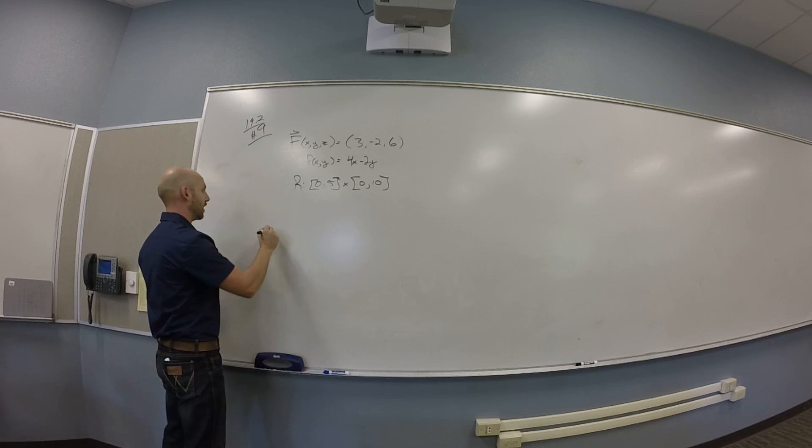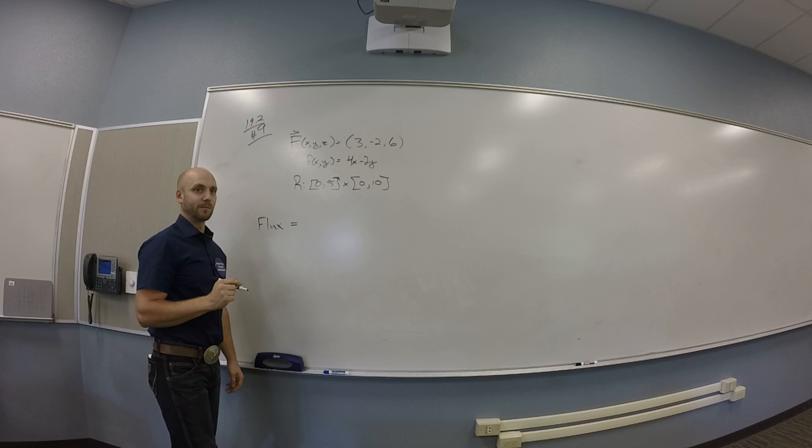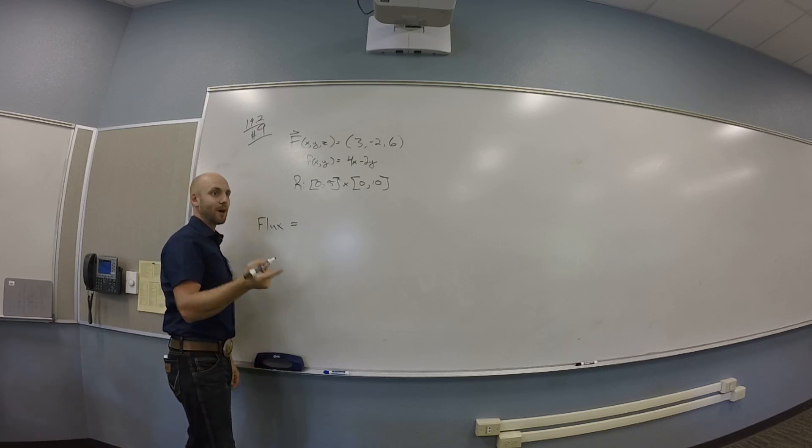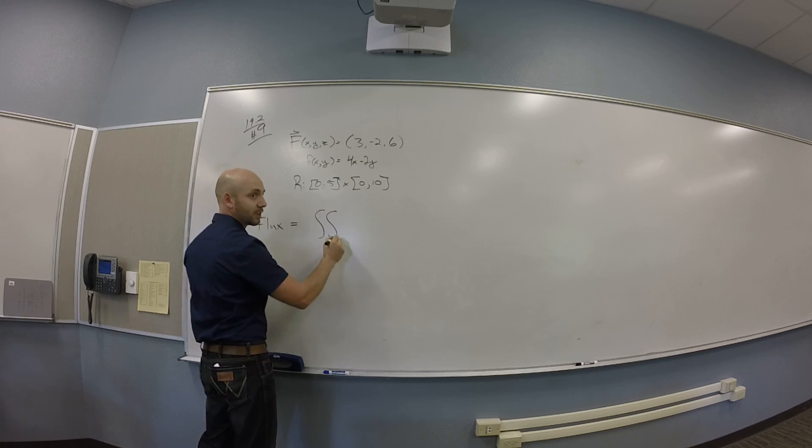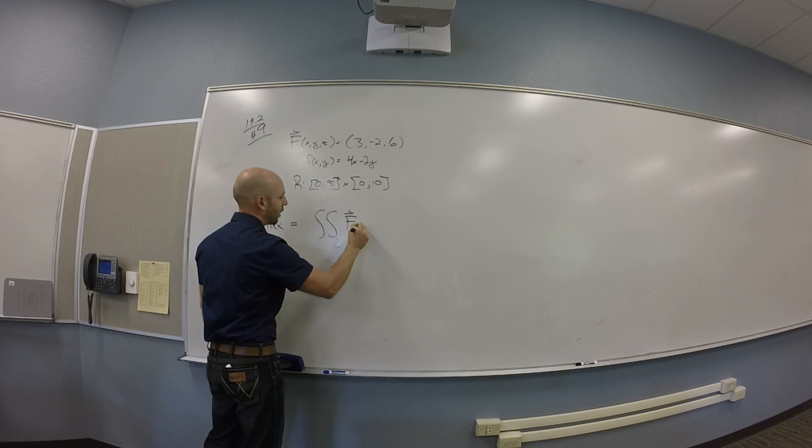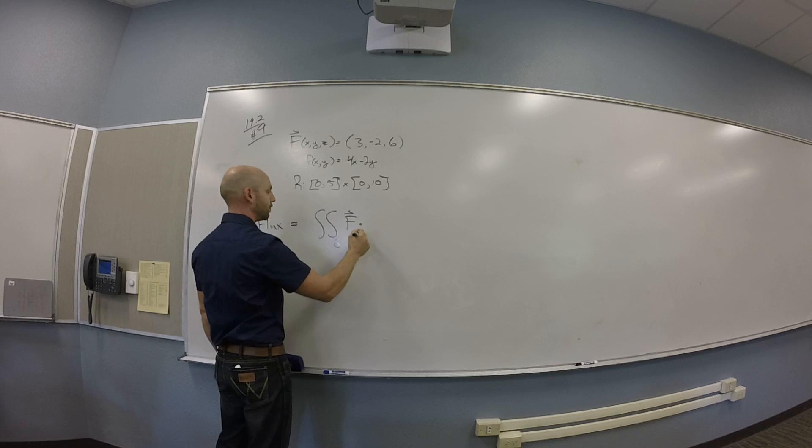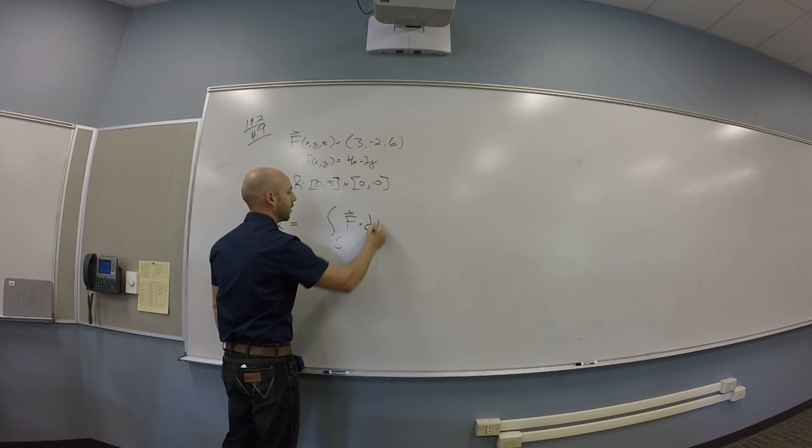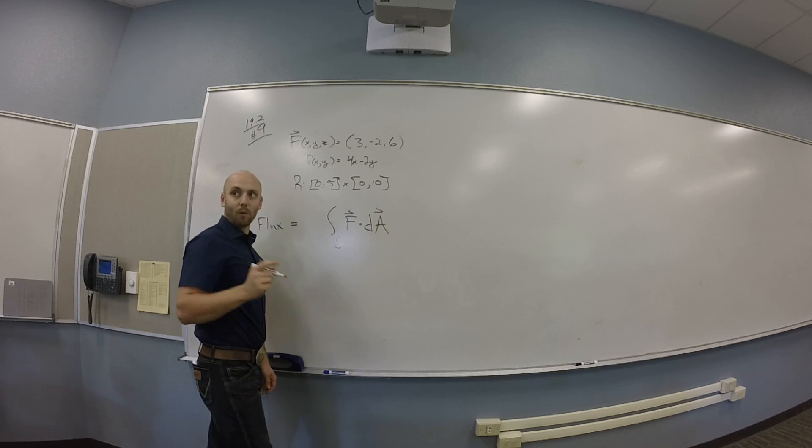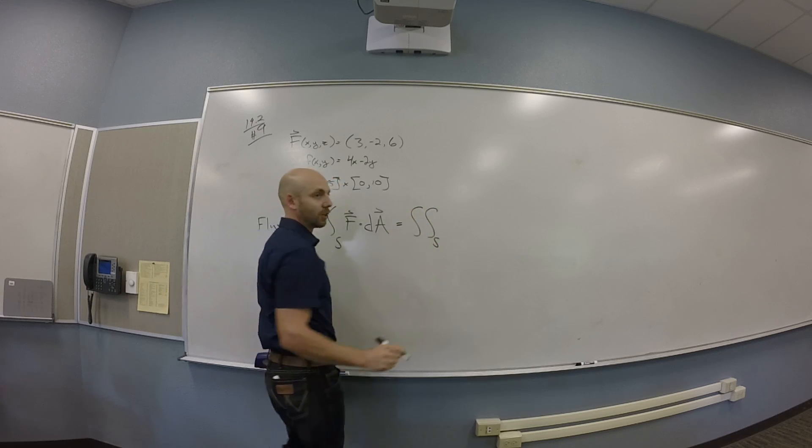So first things first, I need to remember how flux integrals work. So flux is the amount of function dotted with the flow. Yeah, it's the amount of flow, right? So I need the double integral over the surface of the flow dotted with area vector. I need an area vector, right? So really I do the integral over the surface of F dotted with dA, right?